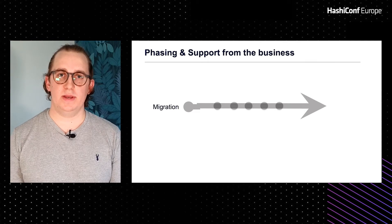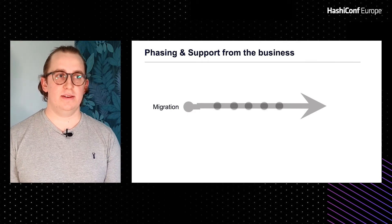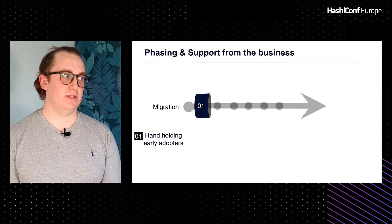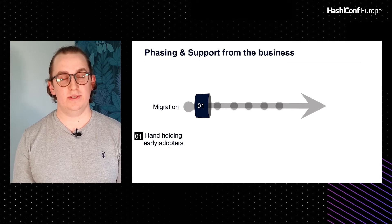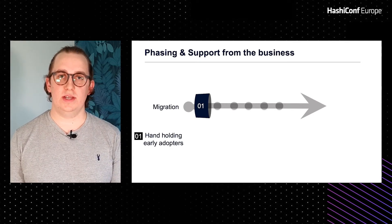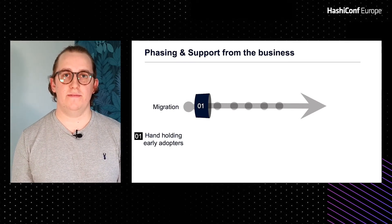Once the technical part was finished, it was time for us as the IAM team to have a battle of hearts and minds. Migrating hundreds of namespaces isn't easy, so we began with hand-holding early adopters. This meant that the first handful of teams joining us on our journey would get first-class service. They would get early access to features we were generating in return for their invaluable feedback about the process, the documentation, and any features that were lacking or needed improvement.